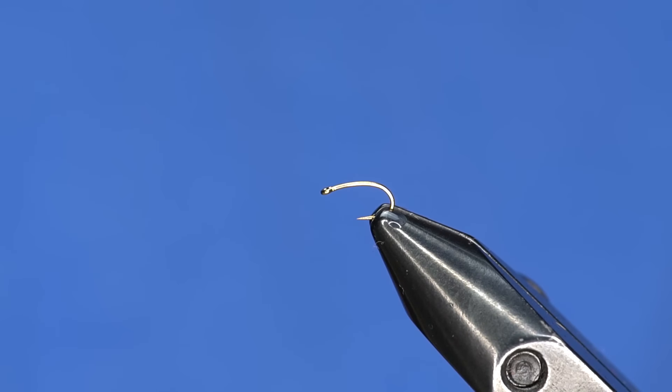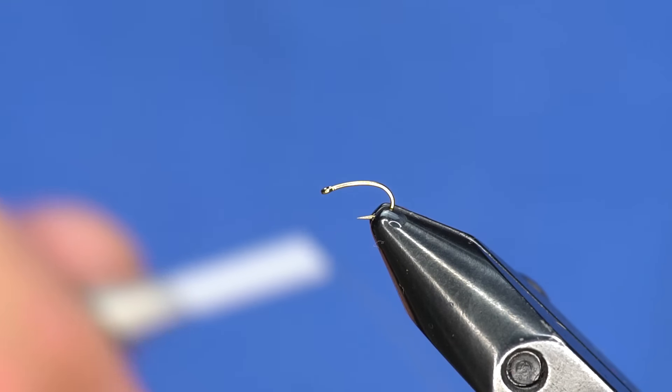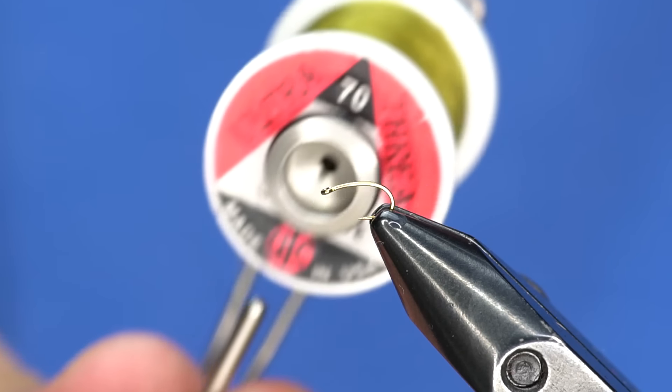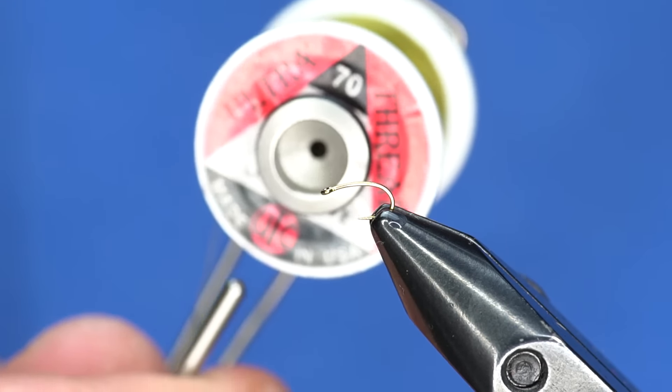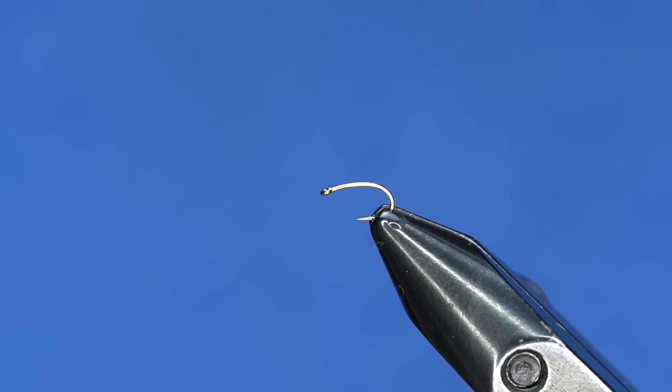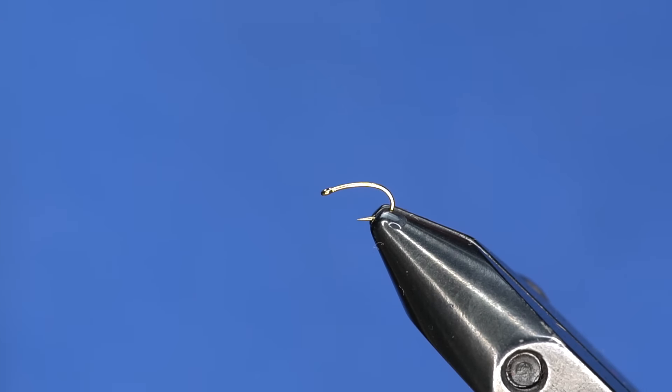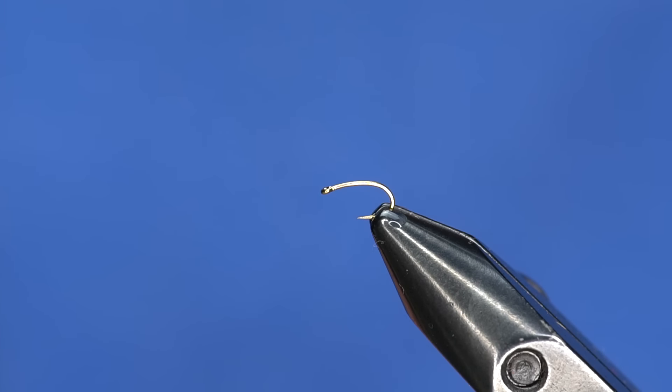This is a 2488, and I'm going to use UTC 70 denier thread. This is actually pretty critical to the fly. I've tried it with other flat threads, and this thread really makes the fly. There's a really unique way that we're going to make the body on this one, and having the correct thread helps a lot.